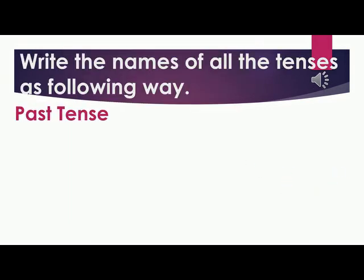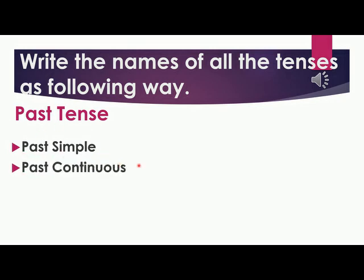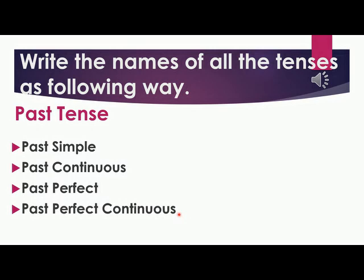Now, let's write the names of all the tenses with their particular branches. So, get ready. Are you ready? Okay. First write past tense. And below it, write the first branch — that is past simple, then past continuous, and past perfect, and write past perfect continuous. We have completed writing the names of past tense and all its branches.